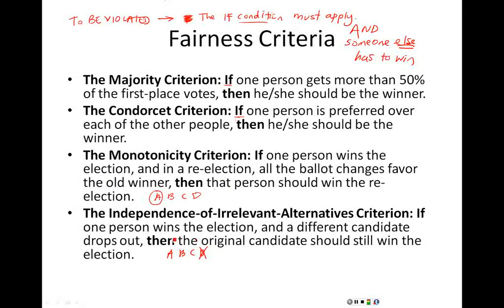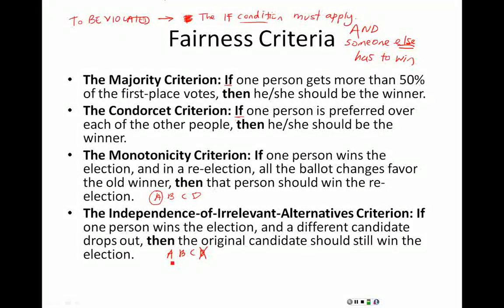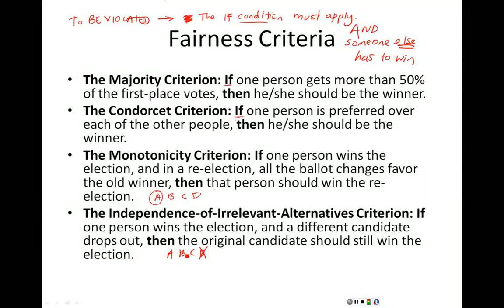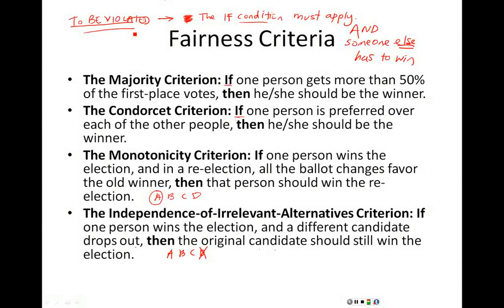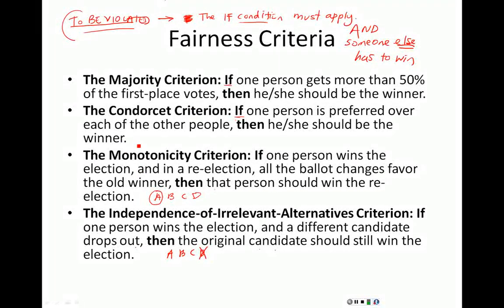For example, looking at the Independence of Irrelevant Alternatives: if A wins the first election and D drops out, we rerun the election. If A wins again, there's no problem. But if we run the election after D drops out and B wins, then we violated the independence of irrelevant alternatives criterion. Both things need to happen: somebody drops out, and then somebody different wins. The condition must apply and someone else must win for the criterion to be violated.